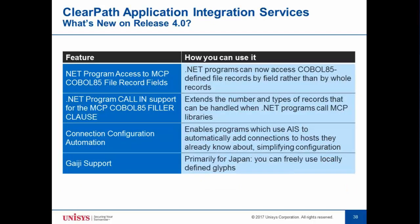AIS 4.0 is the latest release, being released this week or next. The file access capability for .NET applications has been enhanced so that .NET applications can access COBOL-85 file records by individual fields rather than accessing the entire record as a single string. The service allowing .NET applications to make library calls into COBOL-85 programs has been enhanced to handle data records with the COBOL-85 filler clause. Connections can be established automatically by applications using AIS. For users in Japan, AIS supports GAIJI, allowing locally defined glyphs to be freely used in AIS applications.